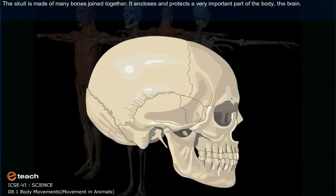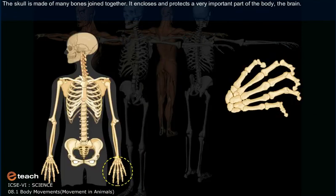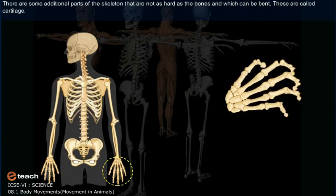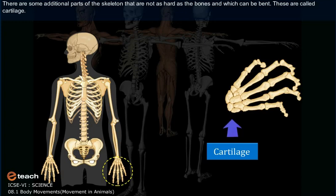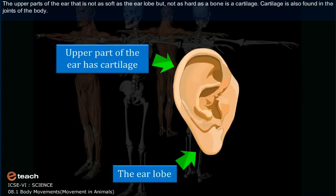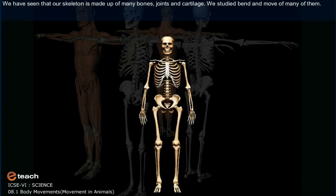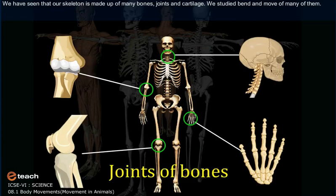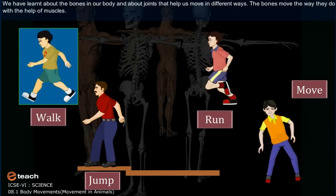The skull is made up of many bones joined together. It encloses and protects a very important part of the body — the brain. There are some additional parts of the skeleton that are not as hard as the bones and which can be bent. These are called cartilage. The upper part of the ear that is not as soft as the earlobe but not as hard as the bone is a cartilage. Cartilage is also found in the joints of the body. Our skeleton is made up of many bones, joints, and cartilage.